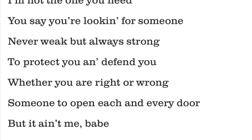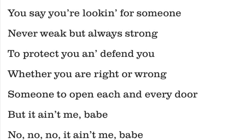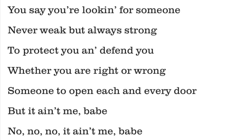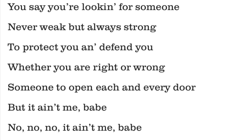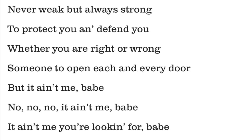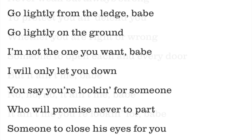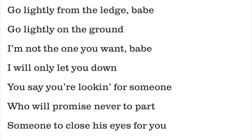Dylan, meanwhile, is saying: 'You say you're looking for someone never weak but always strong, to protect you and defend you whether you are right or wrong. Someone to open each and every door. But it ain't me, babe.' And then he hammers away with the word 'no' — no, no, no. It ain't me, babe. It ain't me you're looking for. He does that at the end of every verse. Just that little detail, the use of the word no over and over: let me be perfectly clear, there's no chance I wanted to be that person for you.